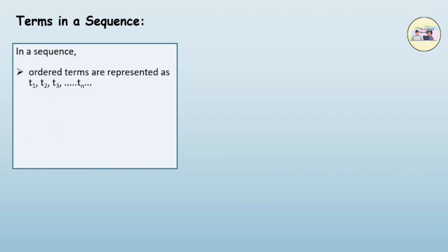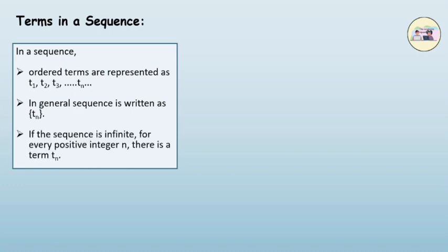Terms in sequence. In a sequence, ordered terms are represented as t1, t2, t3, and tn. In general, the sequence is written as tn. If the sequence is infinite, for every positive integer n there is the term tn.